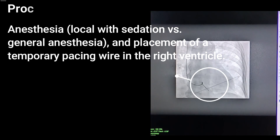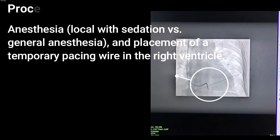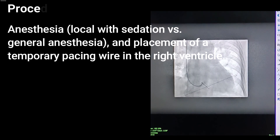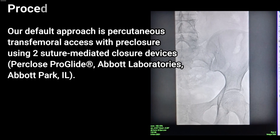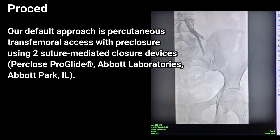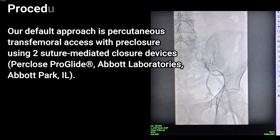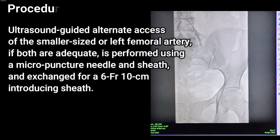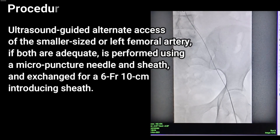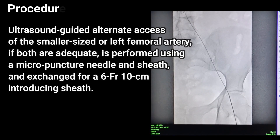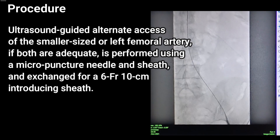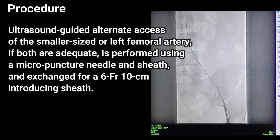Anesthesia can be local with sedation or general anesthesia. A temporary pacing wire is placed in the right ventricle. The default approach is percutaneous transfemoral access with pre-closure using two suture-mediated closure devices. Ultrasound-guided alternate access of the smaller-sized left or right femoral artery is used if both are adequate.